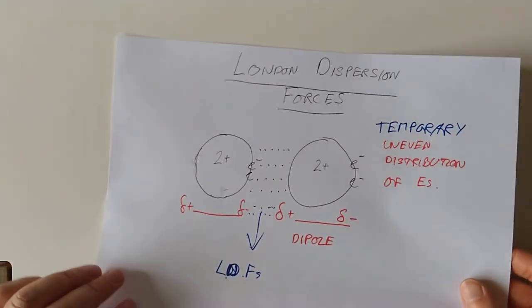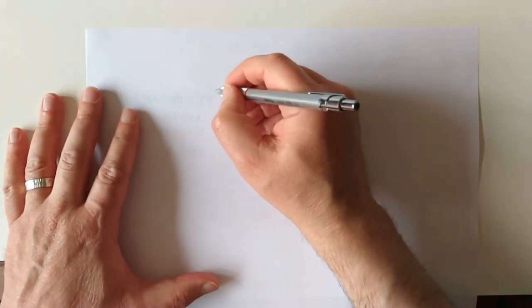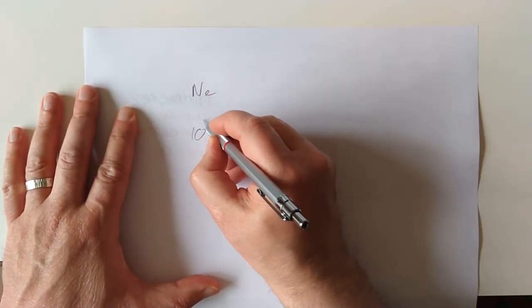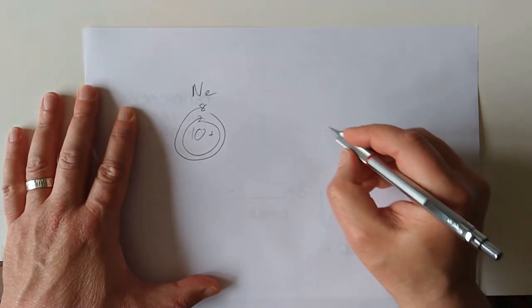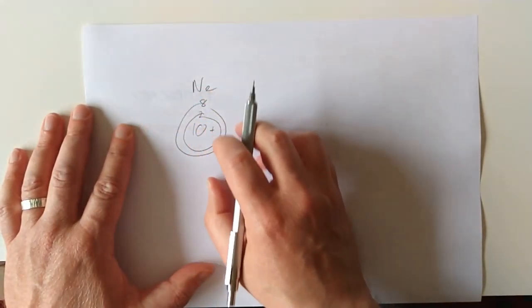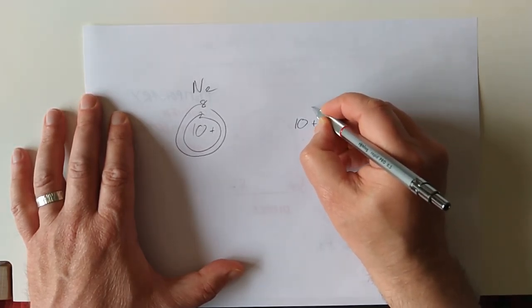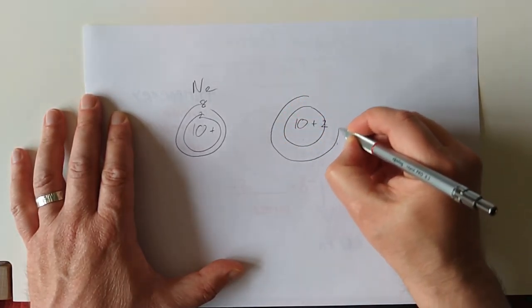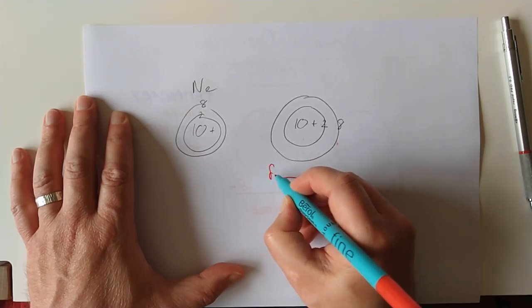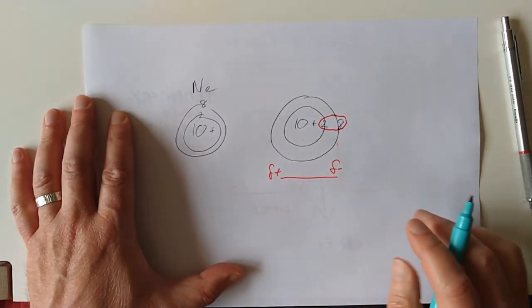My second point is what controls the strength of these London dispersion forces. Let's go with neon. Here's a neon atom with 10 protons in the centre and 2 and 8 electrons. We now have 10 electrons instead of 2. If these 10 electrons randomly happen to be at one end, this dipole is delta positive, delta negative. But because you've got 10 electrons at one end, this delta is going to be larger than it was for helium.